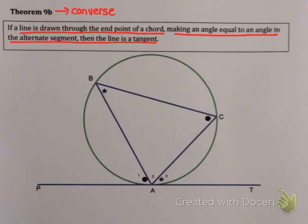Now what this says is if you have a random line which goes through the endpoint of a chord. And if it makes an angle that's equal to the angle in the alternate segment. So if you are given these windsurfer angles are equal. Then you can prove that this line is a tangent.